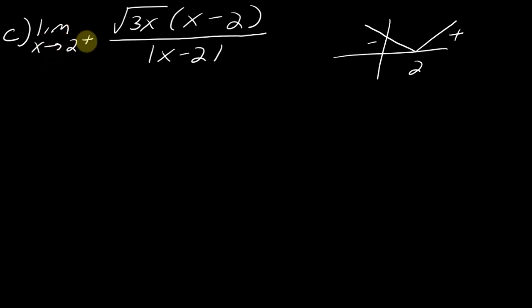So in this case, if I'm approaching two from the right, how would I rewrite this function with the absolute value? Well, I could just rewrite it now by dropping the absolute value.